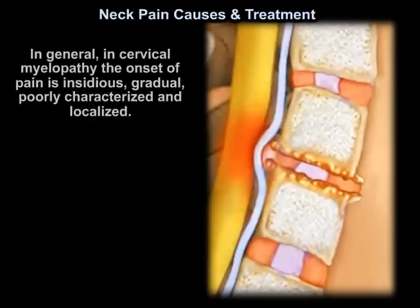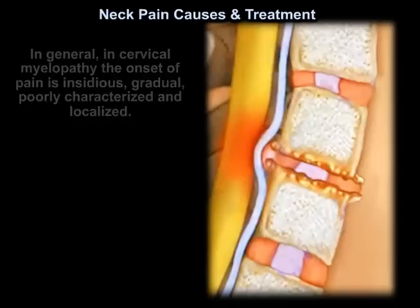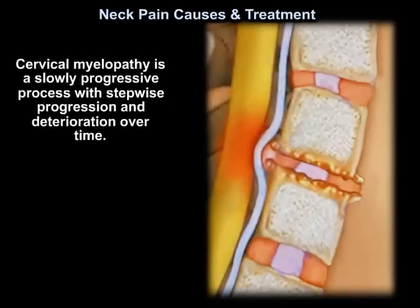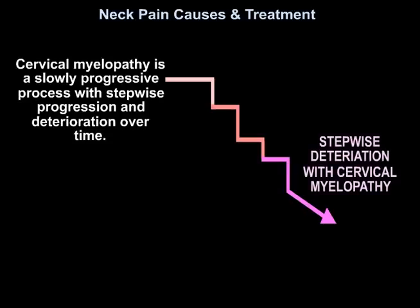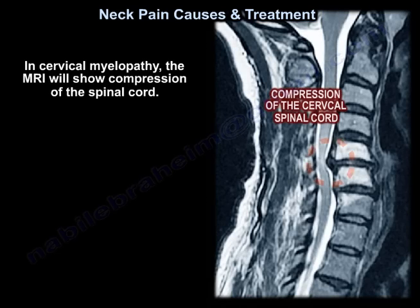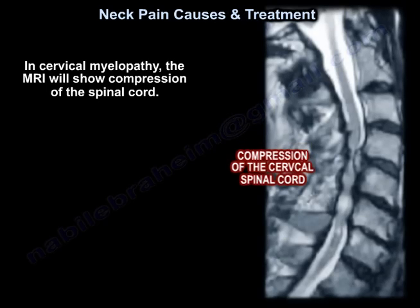In general, in cervical myelopathy the onset of pain is insidious, gradual, poorly characterized, and localized. Cervical myelopathy is a slowly progressive process with stepwise progression and deterioration over time. The MRI will show compression of the spinal cord.